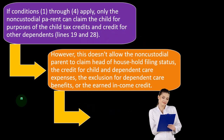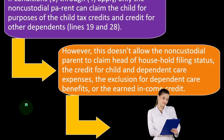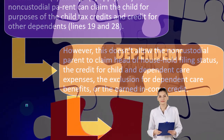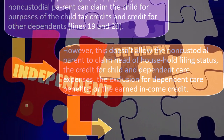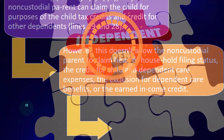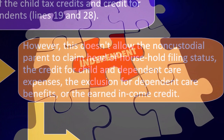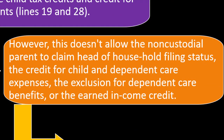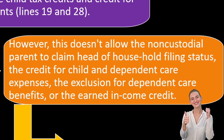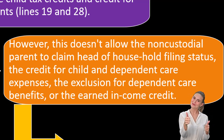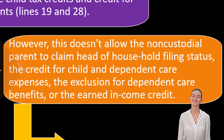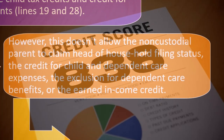This is kind of an unusual situation, because now you're saying that you're not going to claim the dependent, but you could possibly still use them for the head of household filing status. Remember when we talked about the statuses: single versus head of household. If a couple was married, they'd have a married filing jointly status, which is usually a beneficial status.